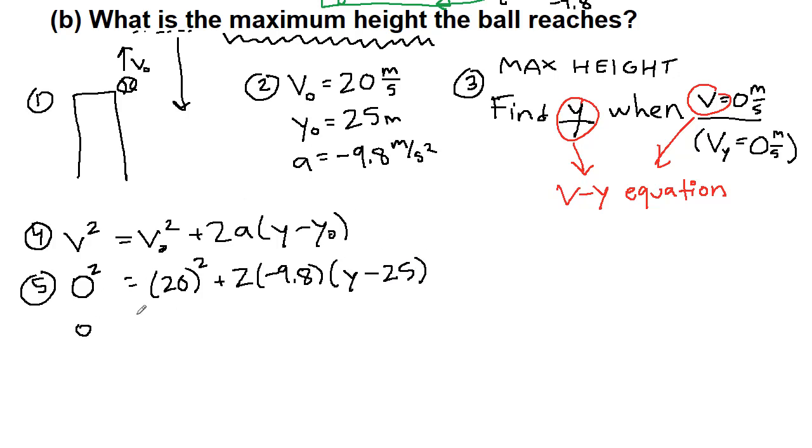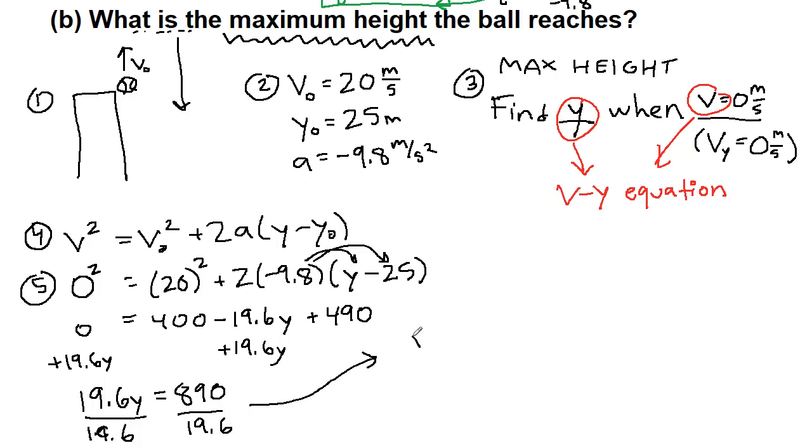Let's simplify this a bit. We have 400, and we have this 2 times negative 9.8 times y, so that's minus 19.6y. We also need to have 2 times negative 9.8 times negative 25, and that's going to end up being positive 490. I'm going to add 19.6y to both sides. So we have 19.6y equals 890. If we divide 19.6 now to get y all by itself, then we have that y is equal to 890 divided by 19.6, which is equal to 45.4 meters.